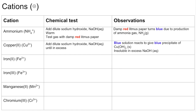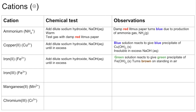For iron two plus, again add dilute sodium hydroxide until in excess. The green solution of Fe²⁺ aqueous ions gives a green precipitate of iron two hydroxide. If you allow that to stand in air, it starts to turn brown because the iron two ions are oxidised to iron three ions. The precipitate is insoluble in excess sodium hydroxide.